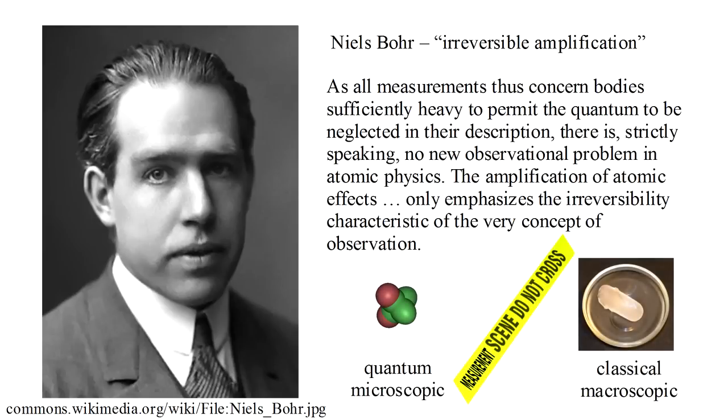In the Copenhagen interpretation, there is a clear distinction between the microscopic quantum world and the macroscopic classical world, but the boundary is never clearly identified. Schrödinger's cat paradox raises the question: where is the boundary between the quantum and classical worlds? Or is it possible that there is no boundary at all?